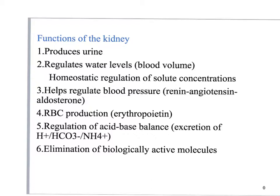Cardiac output equals stroke volume times heart rate. So if you increase blood volume by consuming water, stroke volume goes up, cardiac output goes up, and blood pressure increases. Blood pressure equals cardiac output times peripheral resistance. The kidneys also work to maintain blood pressure. So water levels and blood volume are closely related — regulating one regulates the other.